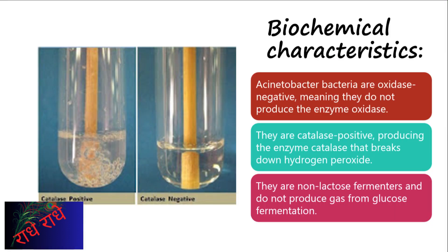Acinetobacter bacteria are gram-negative coccobacilli with several important biochemical characteristics. They are oxidase-negative, meaning they do not produce the enzyme that catalyzes the conversion of oxygen into water, and they are non-lactose fermenters, meaning they do not produce gas from glucose fermentation. Additionally, they are catalase-positive, meaning they do produce the enzyme catalase which breaks down hydrogen peroxide.